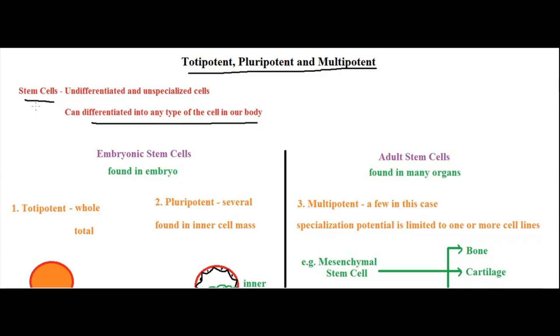These stem cells are not always the same. They are categorized under two types: embryonic stem cells and adult stem cells. You should know where you're going to use these terms and understand the classification. Embryonic stem cells are found in embryos, whereas adult stem cells are found in adult tissues or in many organs.